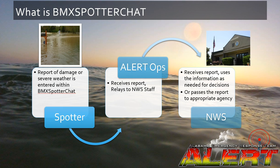The first image shows a report of damage or severe weather sent to the BMX Spotter Chat by the spotter. The next step is the Alert operational member will receive that report and relay it to National Weather Service staff. The National Weather Service then takes that report and uses that information as needed for any decisions they may take, or they'll pass it to the appropriate agency.